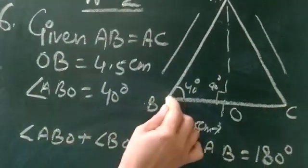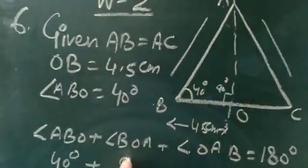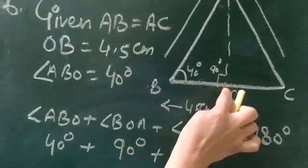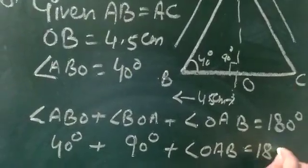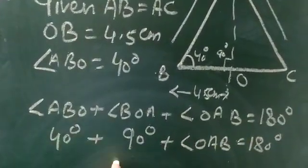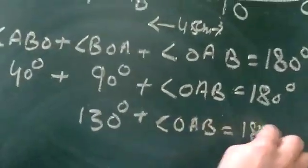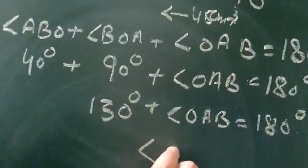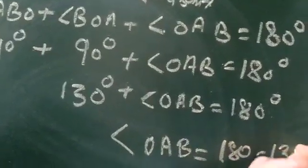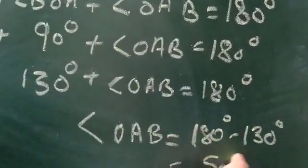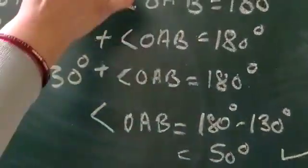Angle ABO is 40 degrees, angle BOA is 90 degrees, and we have to calculate angle OAB. So 40 plus 90 gives 130 degrees, and 130 plus angle OAB equals 180 degrees. Therefore angle OAB equals 180 minus 130, which is 50 degrees.